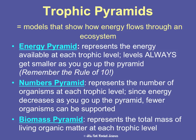The last type is a biomass pyramid, which shows the total mass of living organic matter at each trophic level — for example, how many kilograms of producers are at the first level, or how many kilograms of primary consumers are at the second level. For a stable ecosystem, the biomass should get smaller at each higher level in order to stay balanced.